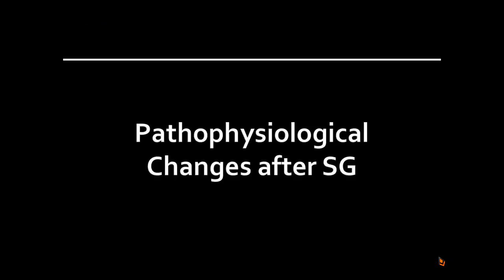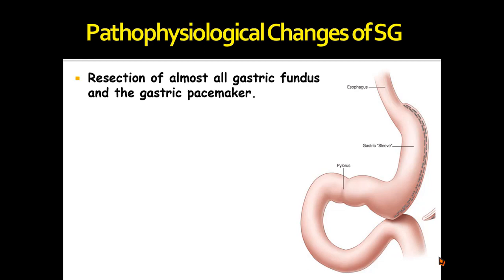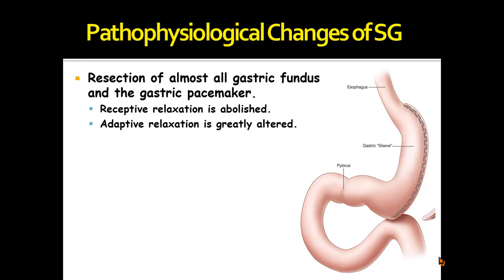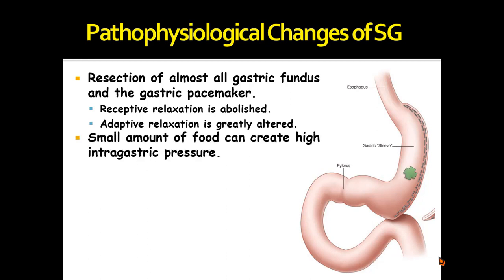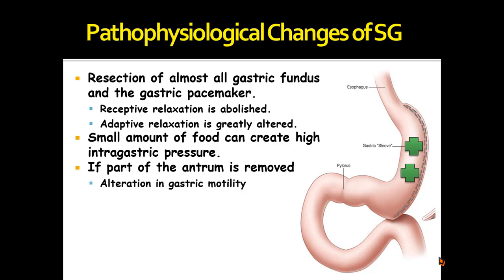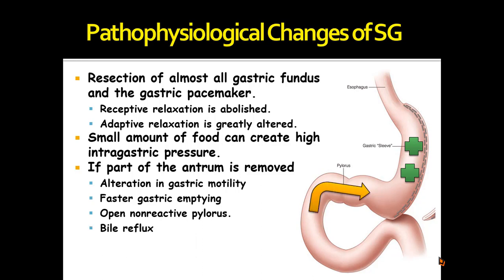What are the pathophysiological changes after sleeve gastrectomy? Following sleeve gastrectomy and resection of almost all of the gastric fundus and the gastric pacemaker, receptive relaxation is abolished and adaptive relaxation is greatly altered, so even a small amount of food can create high intragastric pressure. Also, if part of the antrum is removed, there will be alteration in gastric motility — faster gastric emptying, an open non-reactive pylorus, and probably bile reflux — all leading to increased intragastric pressure and finally reflux.